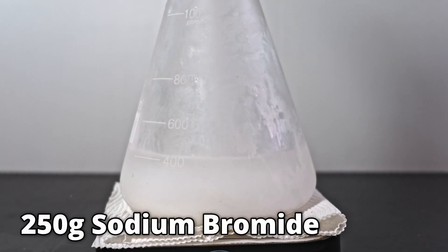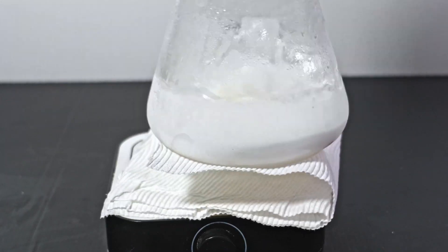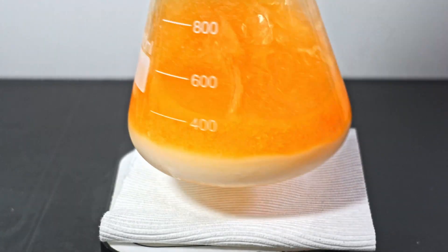I add the final 250 grams of sodium bromide and begin the dripping. Again, I have to manually stir because of the duration of the addition.